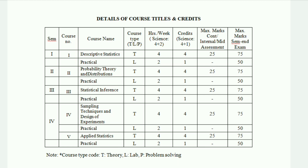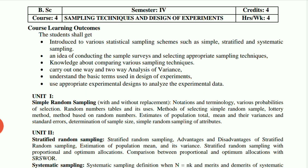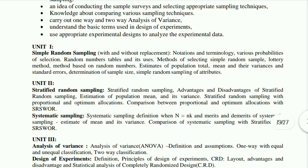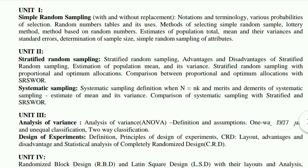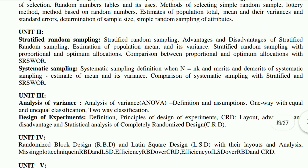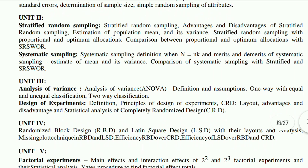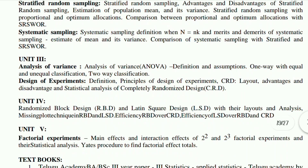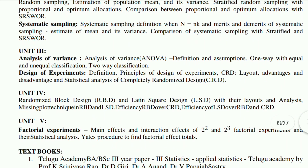In this video, you can see Course 4: Sampling Techniques and Designs of Experiments. We have, as usual, 5 units. Unit 1: Simple Random Sampling. Unit 2: Stratified Random Sampling and Systematic Sampling. Unit 3: Analysis of Variance and Design of Experiments. Unit 4 and Unit 5: Factorial Experiments.